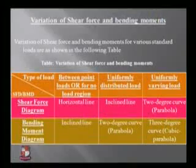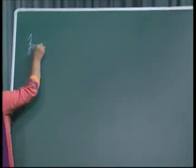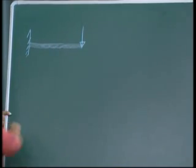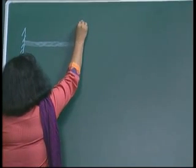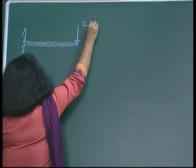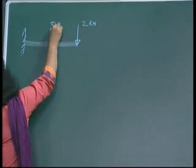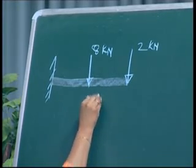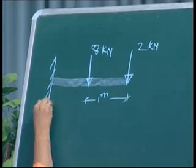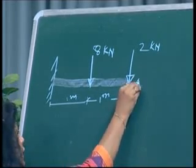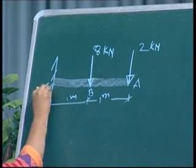Today I am going to take one problem based on shear force and bending moment diagrams. I am taking a cantilever beam. We can see that there are two types of loads acting on this beam — one of intensity 2 kilo Newtons and second of intensity 8 kilo Newtons — and the distances are 1 meter and 1 meter. For this, if I want to draw a shear force and bending moment diagram, we have to follow different steps.